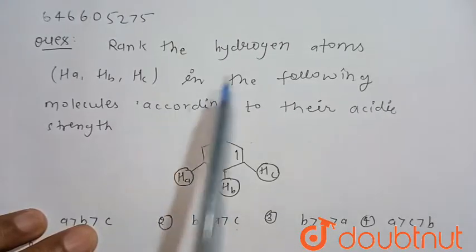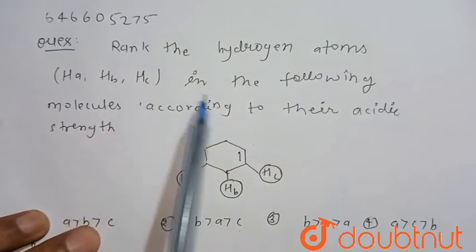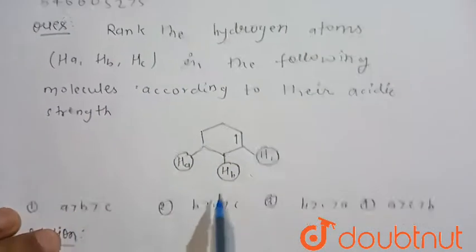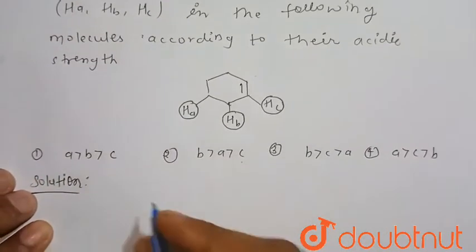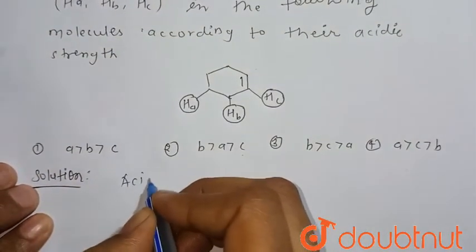Rank the hydrogen atoms Ha, Hb, Hc in the following molecule according to their acidic strength. This is Ha, this is Hb, this is Hc and these four options are given. So we have to find the answer.